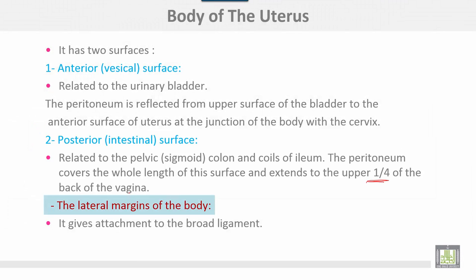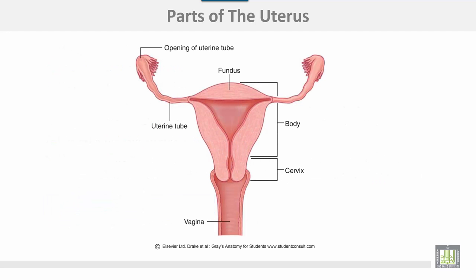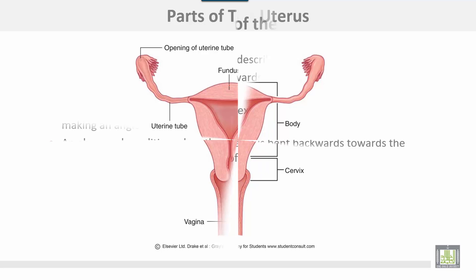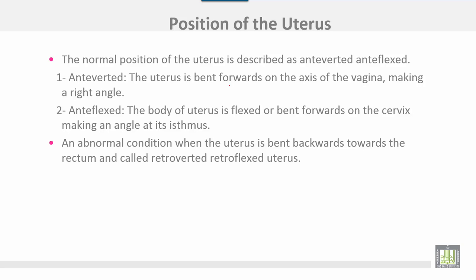The lateral margins of the body give attachment to the broad ligaments. This is the body of the uterus, and this is the cervix. Here are the uterine tubes, and the area above the attachment of the uterine tubes is called the fundus of the body.